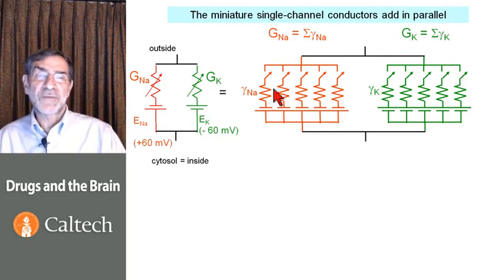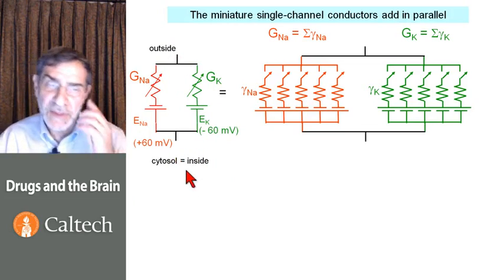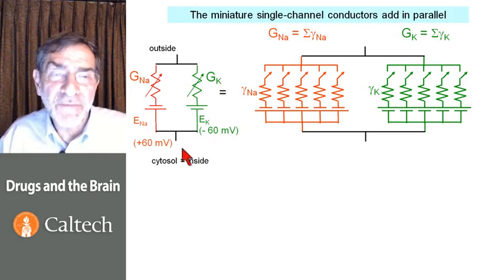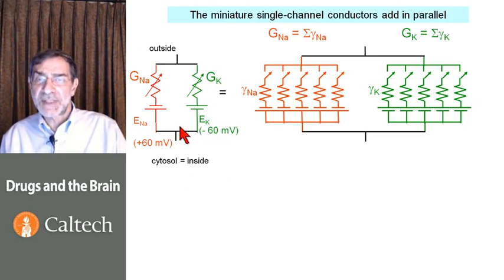We can abstract further and say that because a large number of individual channels act sum in parallel, if their switches allow them to, we have a variable total conductance. That will be GNA in series with the Nernst potential for sodium and a variable potassium conductance in series with a Nernst potential for potassium. Here we have the outside of the cell and the inside of the cell. This becomes a very convenient way of calculating voltages, calculating the resting potential of a cell.